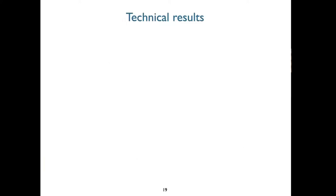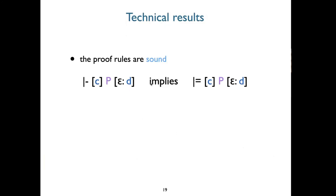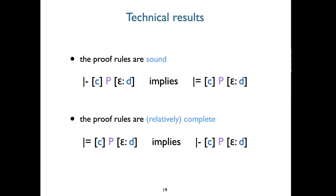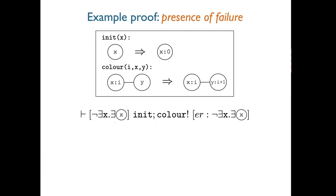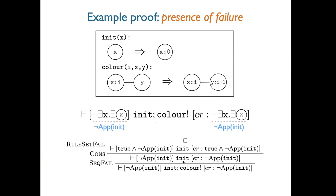Our technical results: these rules are sound — if you can prove something using them, it's valid according to under-approximate validity — and they're relatively complete. For a first example: our coloring program can fail if you don't have a graph with an integer-labeled node. We can prove this by taking a triple that asserts we exit in finite failure and that the 'init' rule is inapplicable. This is simple because we get it directly from the rule set failure axiom — it happens right at the beginning when there's no integer-labeled node present.